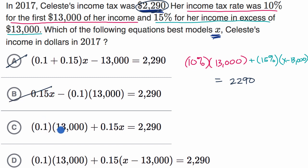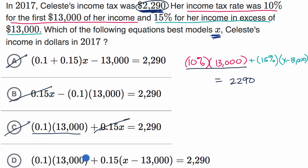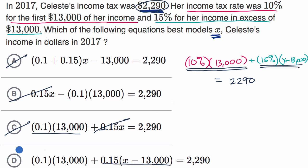This is 10% on the first $13,000 — so this and this are definitely equivalent — and then 15% on her total income. No, it should be on the excess, so rule this one out. This one: 10% of the first $13,000, that's equivalent, plus 15% of the excess, that is equivalent to this, and that should equal $2,290. So I like that choice.